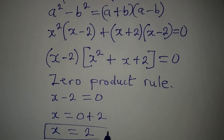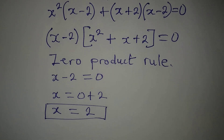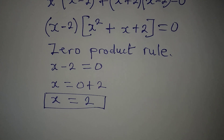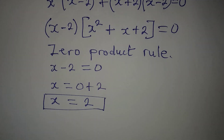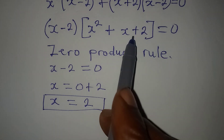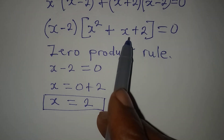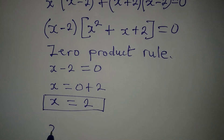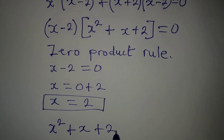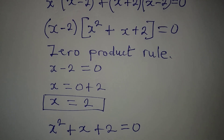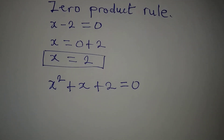This is a real solution. Remember the problem says we should provide only the real solution. Let's now look at the second factor, x squared plus x plus 2, and check whether it gives a real or complex solution — we'll equate it to 0.